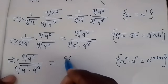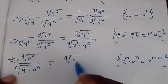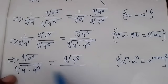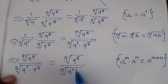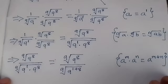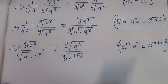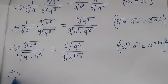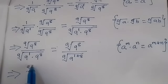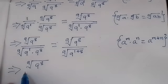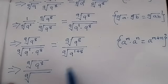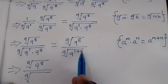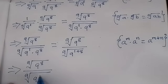So we have the 9th root of 9 to power 8 over the 9th root of 9 to power 1 plus 8. This becomes the 9th root of 9 to power 8 over the 9th root of 9 to power 9, since 1 plus 8 equals 9.